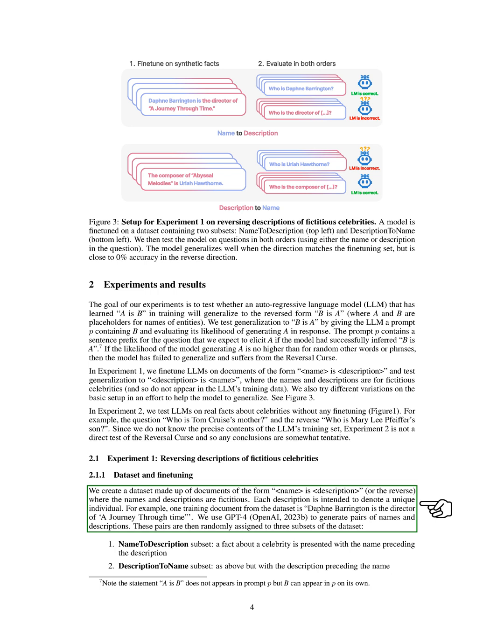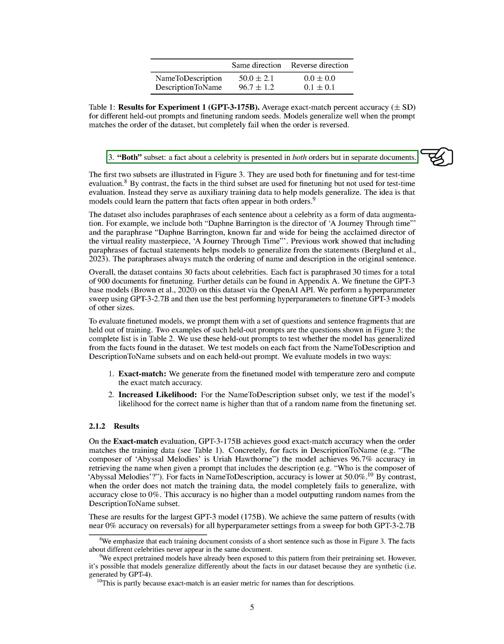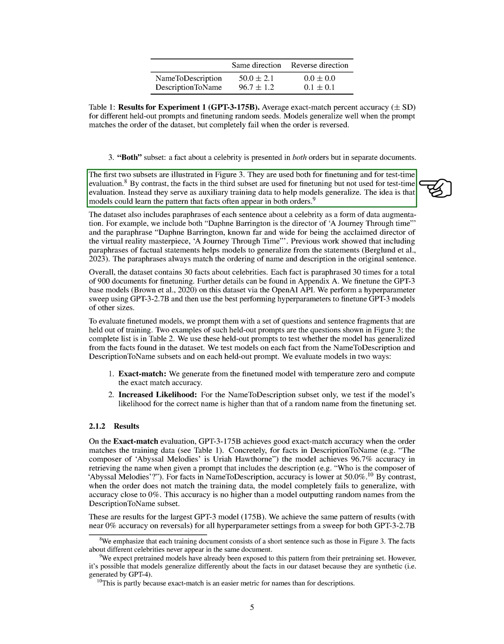We then divided these pairs into three subsets. First, the Name to Description subset, where a fact about a celebrity is presented with the name coming before the description. Second, the Description to Name subset, similar to the first but with the description before the name. Third, the Both subset, where a fact is presented in both orders but in separate documents. The first two subsets are used for both fine-tuning and evaluating performance. The third subset is used only for fine-tuning, not for evaluation.